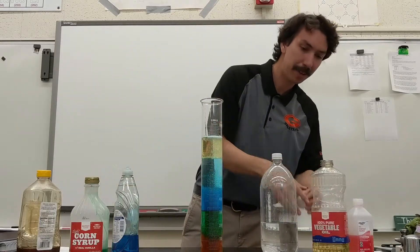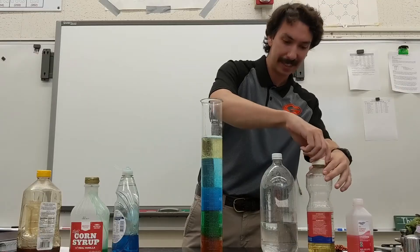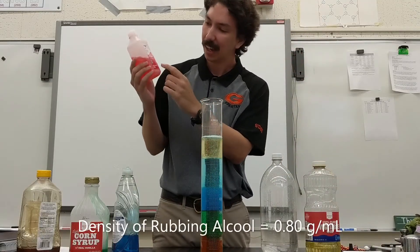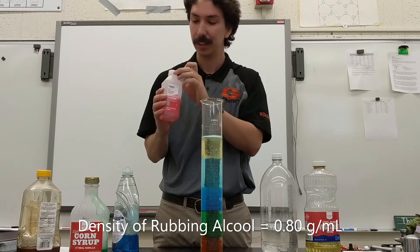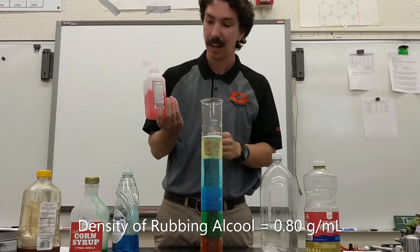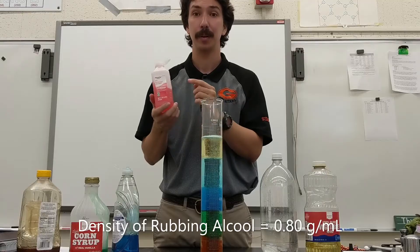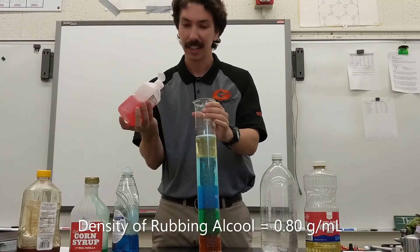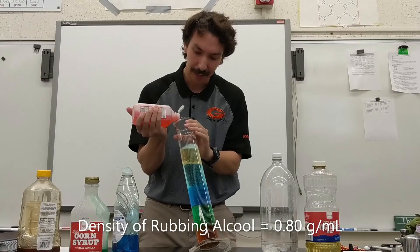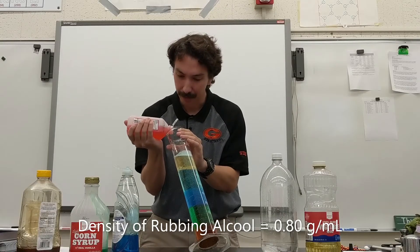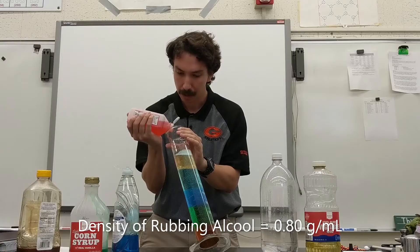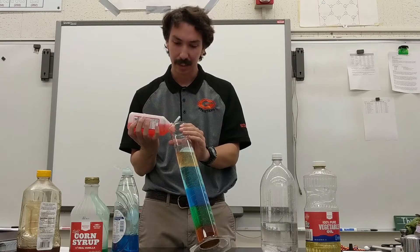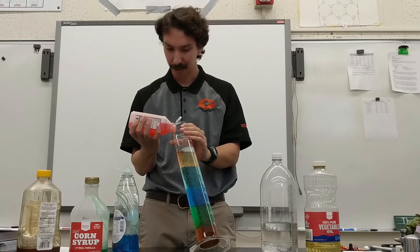And then on top, the least dense liquid we're going to be using is isopropyl alcohol. I gave it some nice red coloring to it, just so we could see the difference. And we all saw that experiment where the ice cubes sink in the isopropyl alcohol. That's because it is a very low dense liquid here. Low density. So we're going to put this and it should stay right on top of that oil.